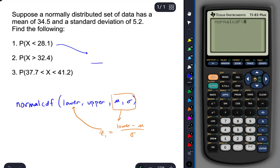So for instance, if I have a normally distributed set of data, and in this case, I'm told that I have a mean of 34.5 and a standard deviation of 5.2.